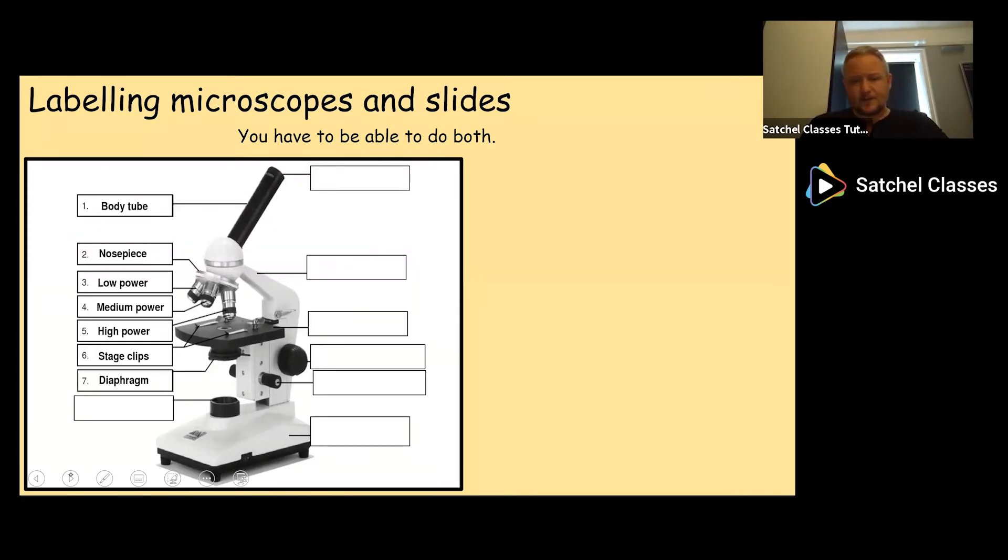The diaphragm is that little circle underneath the stage. You can't see it from this picture, but it has lots of different sized holes and it spins, so you can control the amount of light coming through the hole in the stage into the objective lens. The light source illuminates the specimen on the stage. The eyepiece is what you look down. The arm connects the lenses to the rest of the microscope and allows you to carry it. You should always carry a microscope by the arm and never anywhere else.